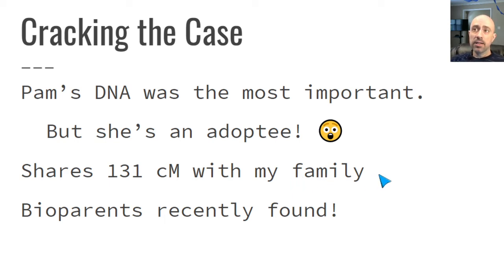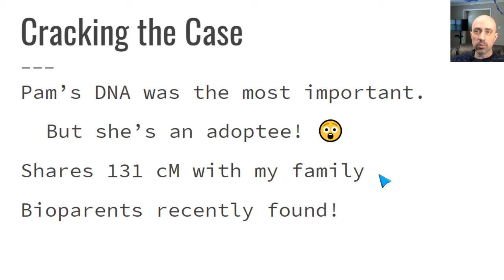Pam, despite the fact that she's an adoptee, turned out to be the most important match in this group. I don't want adoptees or people working with adoptees to be discouraged, because with the power of triangulation, we can make use of the match lists and the triangulation groups that our adoptee matches generate. With Pam, it was very clear because she shares 131 centimorgans with my family, which is a good amount. And because each one of those segments she shares with my family appears to be DNA passed down from Spivey ancestry, we were very confident about her being a Spivey long before her biological father was identified.